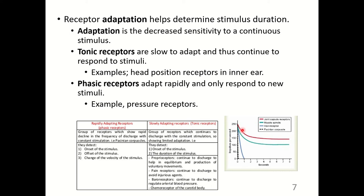Joint capsule receptors and muscle receptors will continue to fire and do not adapt, helping maintain balance. However, hair receptors and Pacinian corpuscles will rapidly adapt and essentially stop paying attention to the stimulus as long as nothing has changed and it's not injurious.